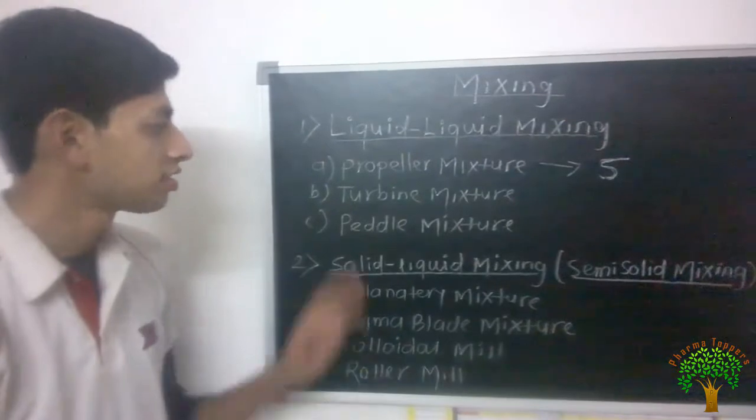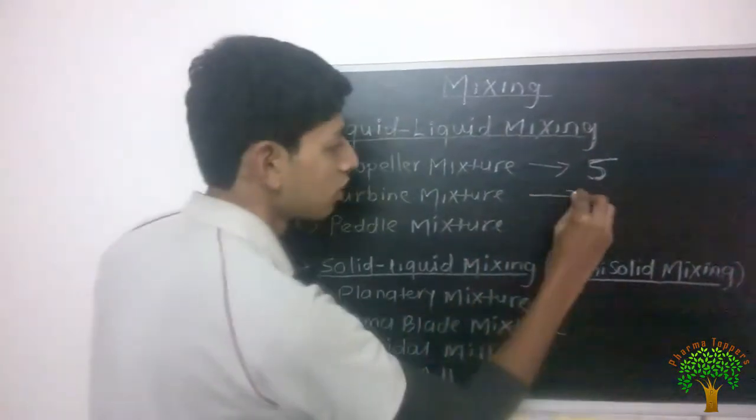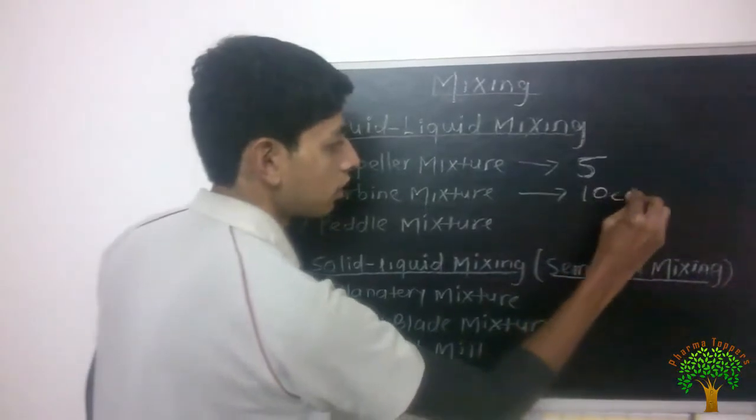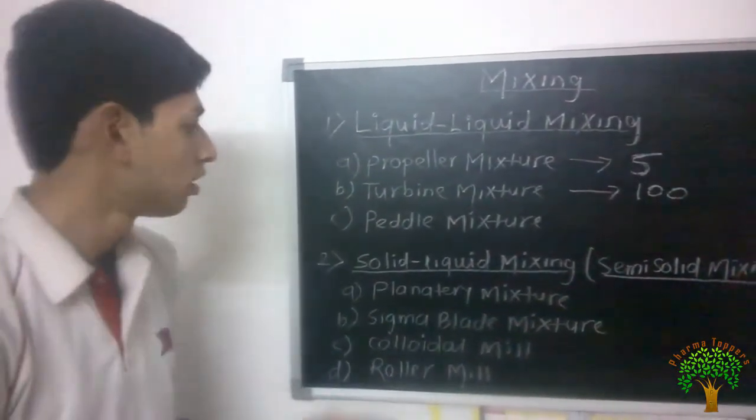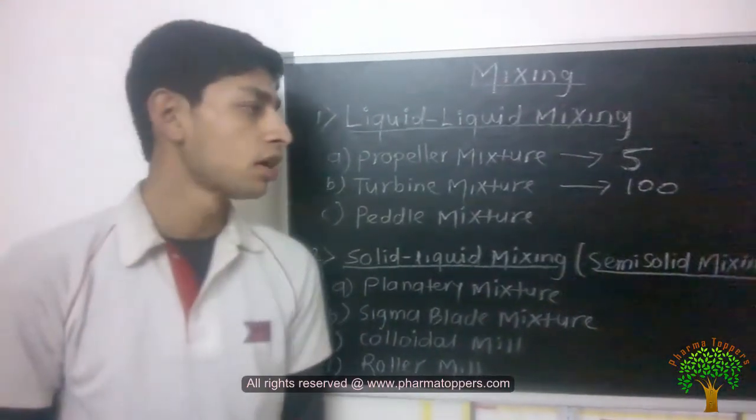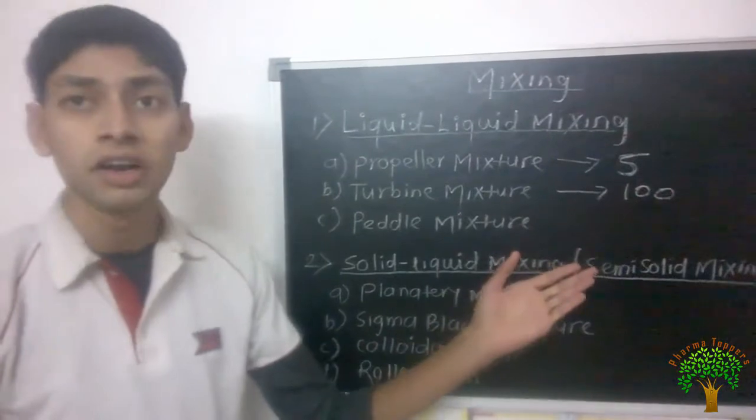In case of turbine mixture, the same mechanism as like propeller mixture but viscosity is up to 100. Up to 100 viscosity we can use turbine mixture. And if our liquid contains higher viscosity as compared to this 100, now paddle mixing.